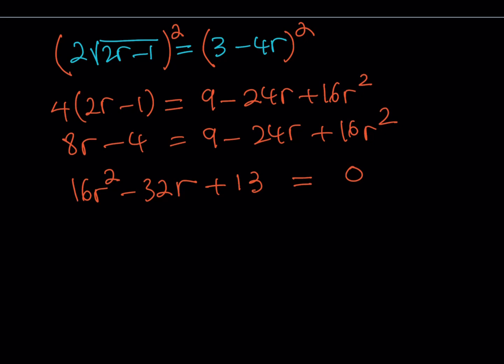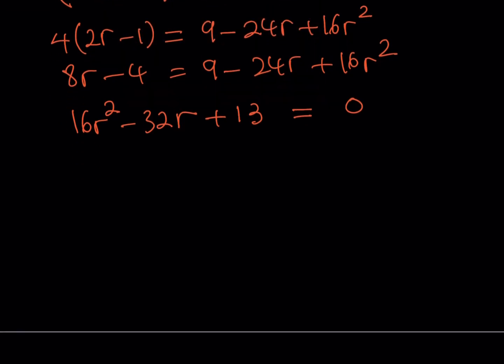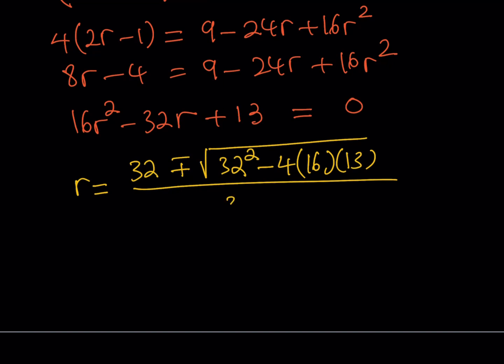So this is going to be 4 times the quantity 2r minus 1 equals 9 minus 24r plus 16r squared. And this is 8r minus 4 equals 9 minus 24r plus 16r squared. Now, let's go ahead and collect everything on the right-hand side where r squared is positive. Negative 24r minus 8r is going to be negative 32r. And then I have a 9 plus 4 is going to be 13. This is my quadratic equation. What can I do? I can solve this with the quadratic formula. It's a miracle, right? We have a formula. We don't have a quintic. We don't have anything higher than a quintic. But we do have the quartic. We do have the cubic. So on and so forth. But they are quite complicated.